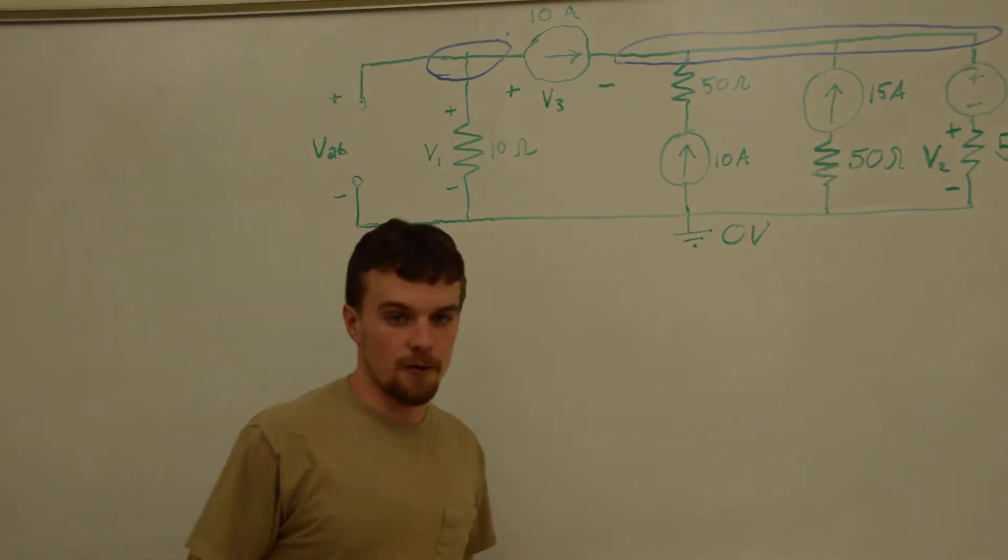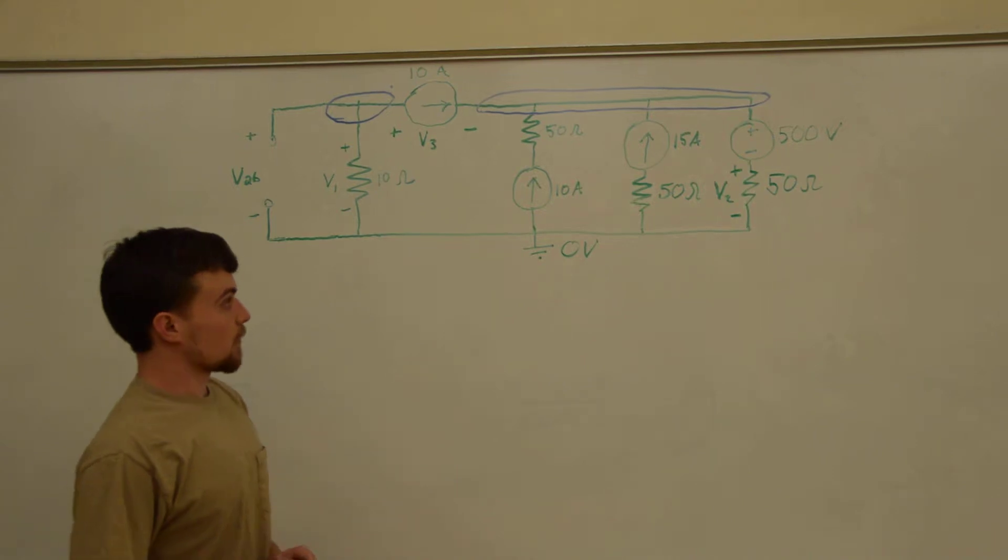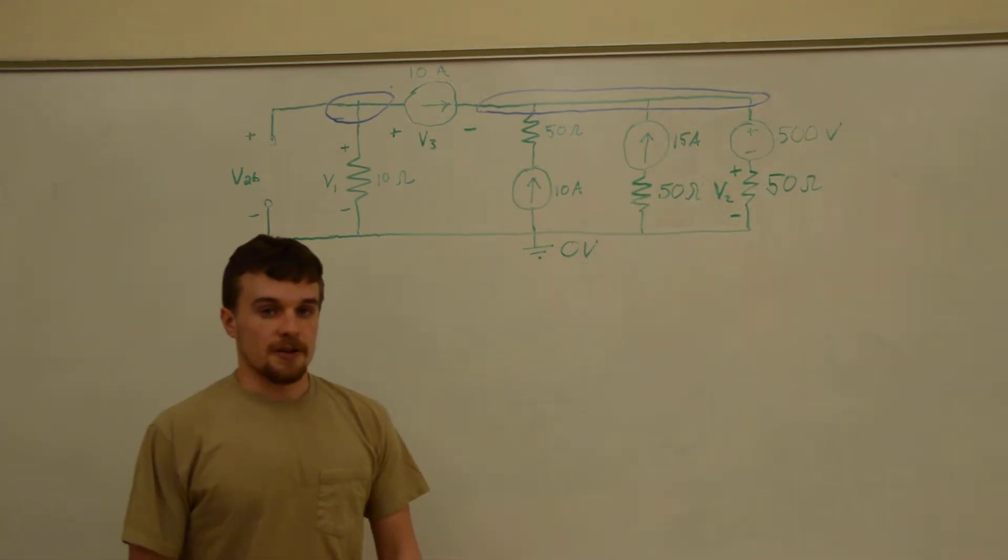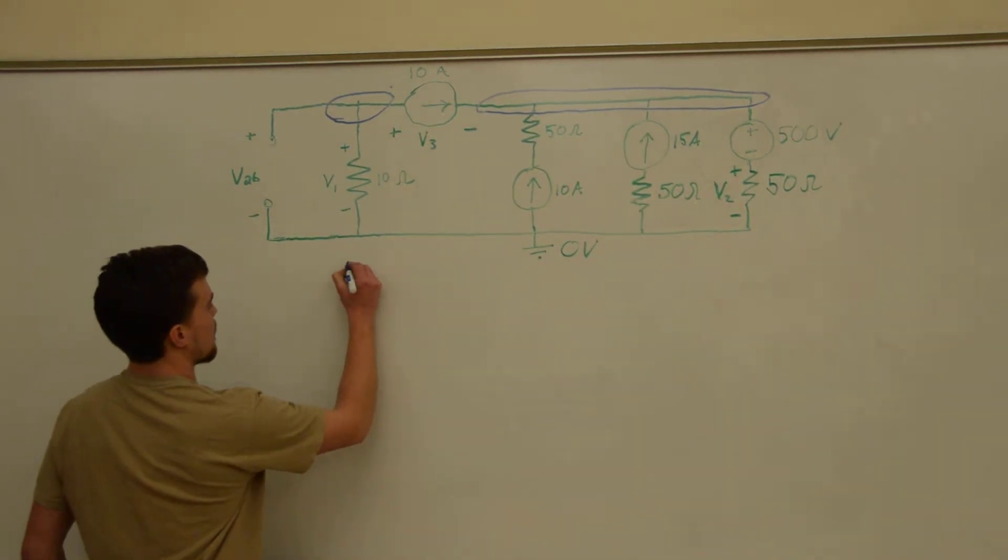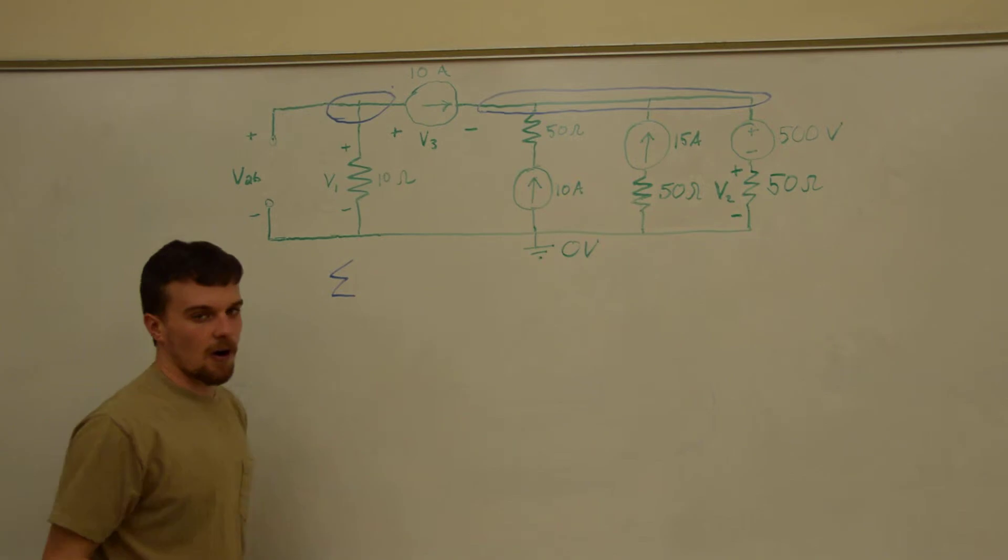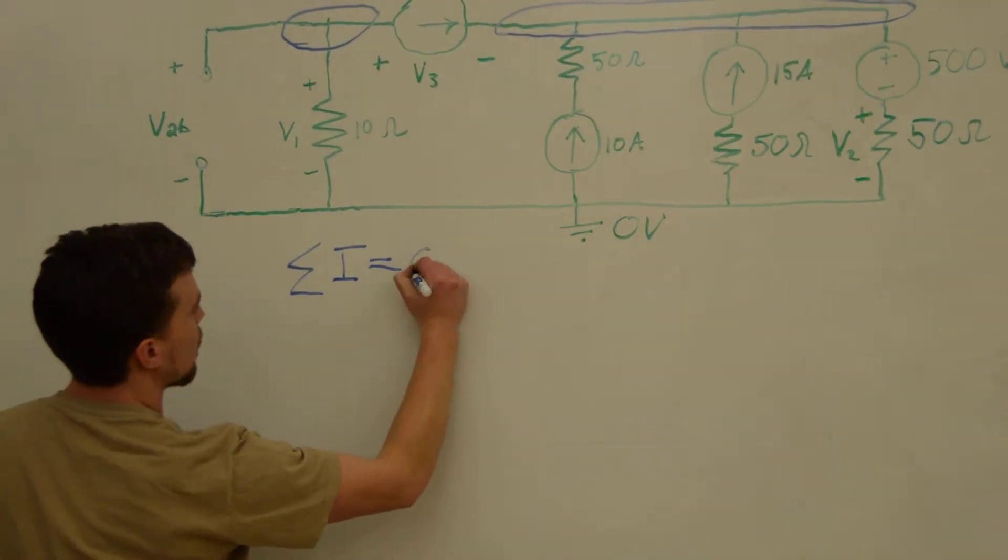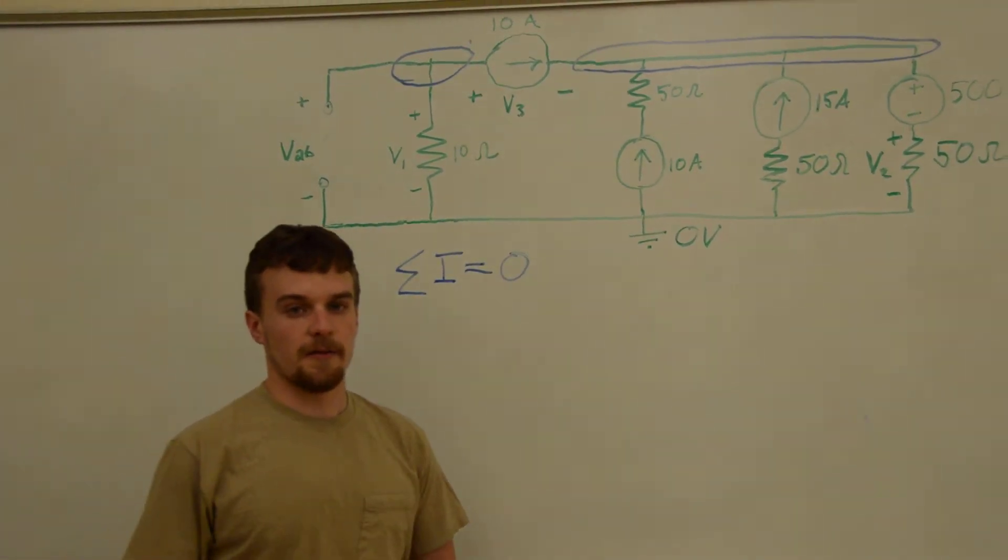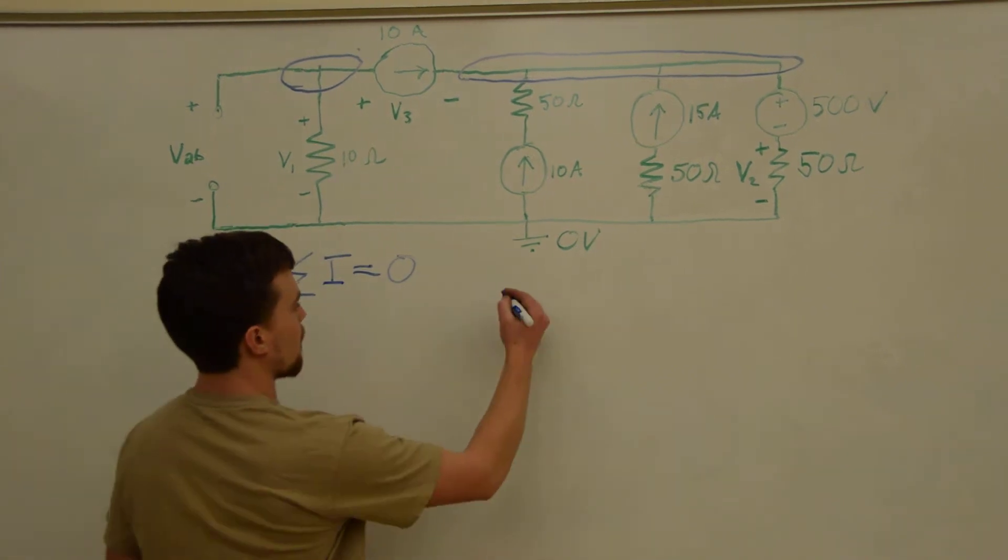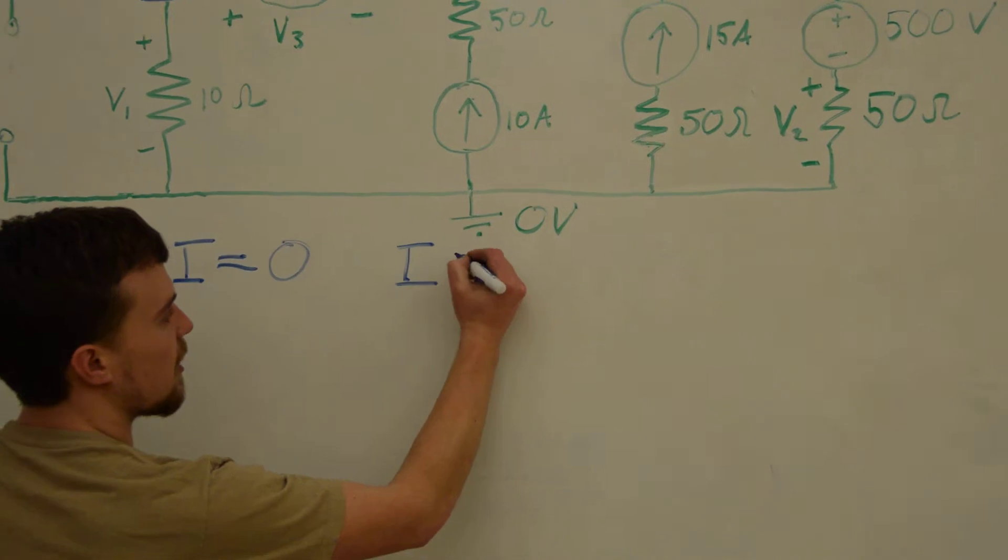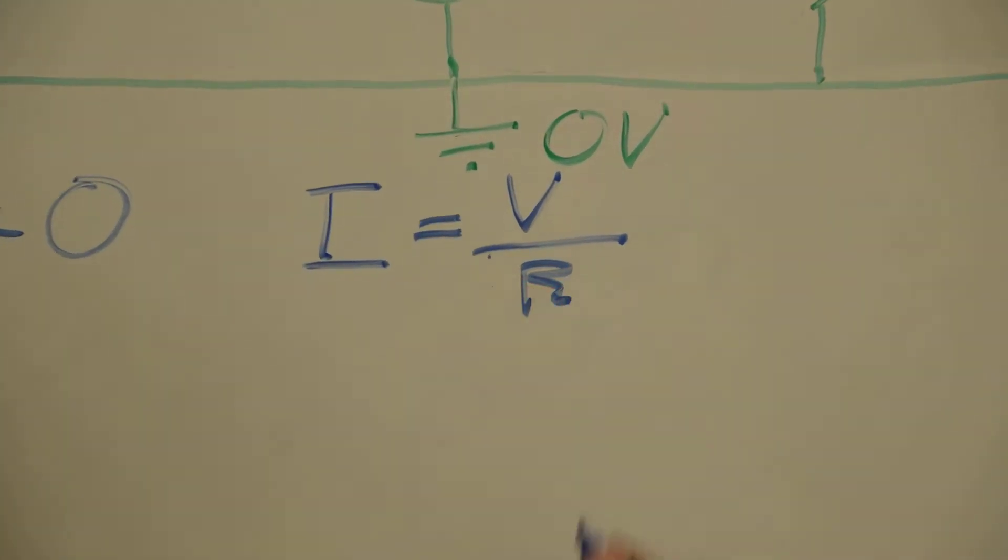Alright, so we have two unknown nodes. Now the principle we are going to use to solve for these is called Kirchhoff's Current Law. That states that the sum of all of the currents leaving any node is going to equal zero. And furthermore we need a way to define currents leaving the node. For that we will use a rearranged form of Ohm's law: current equals voltage over resistance.